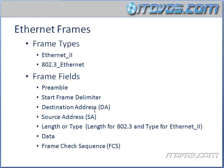Then we have the destination address, which is going to be the MAC address — the destination of the frame. Then the source address, which is where the frame came from — also a MAC address. Then there's a length or type field. With 802.3 frames it's going to be length, and with Ethernet 2 frames it's going to be type, also called the Ether type field — we'll talk about that in a second.